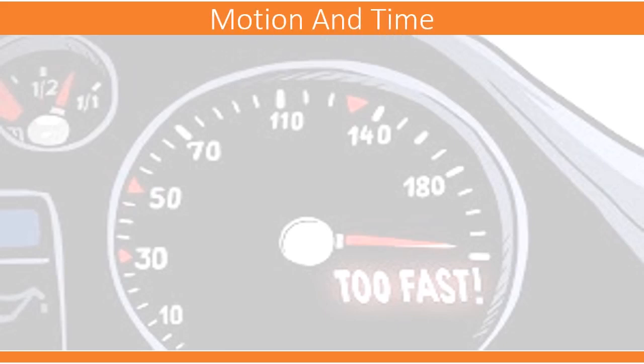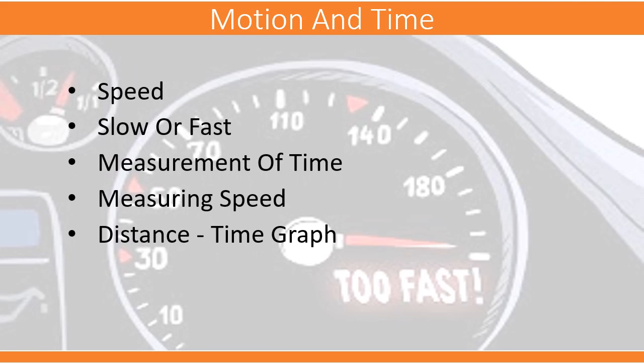Next chapter is Motion and Time. Under this chapter, we will study about speed. We will learn how to calculate whether an object is moving slow or fast. We will see how time is measured and how speed is measured, and we will learn how to draw distance-time graphs.